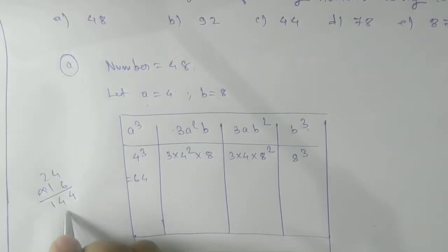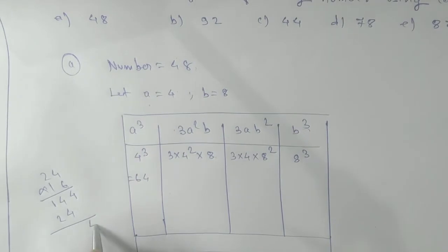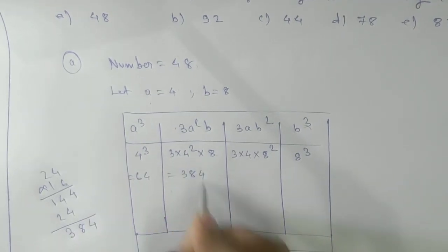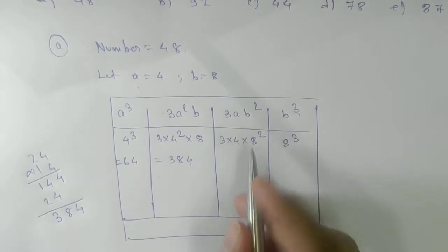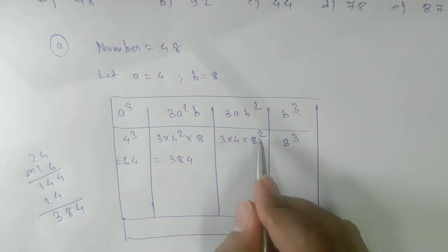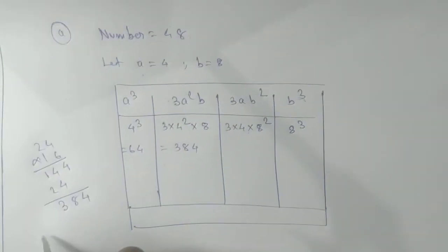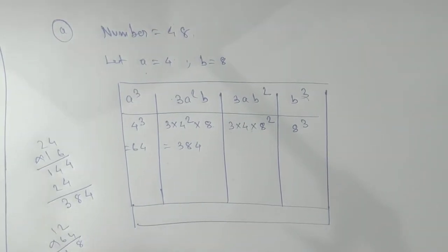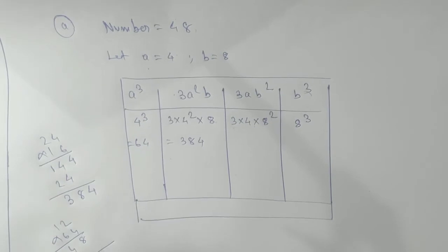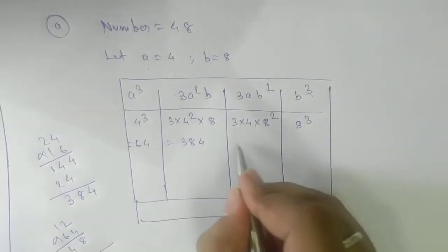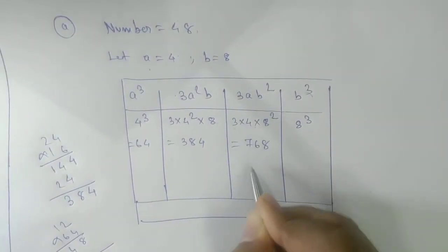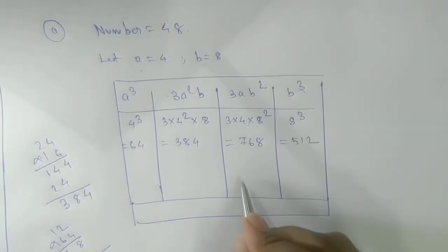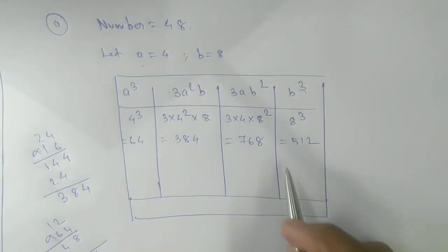Now we need to multiply here. 3 times 8 is 24, and 16 times 24 is in your hand 384. Next, 12 into 64. 12 into 64: 8 times 4 is 12, 7, we are getting here 768.